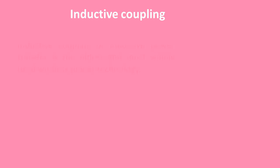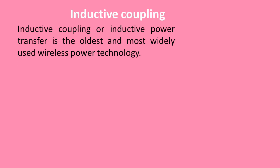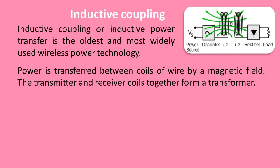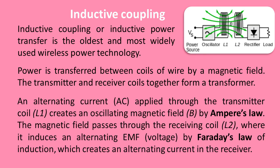Inductive coupling, or inductive power transfer, is the oldest and most widely used wireless power technology. Power is transferred between coils of wire by a magnetic field. The transmitter and receiver coil together form a transformer — the transmitter coil on one side, the receiver coil on the other, with an air gap in between.